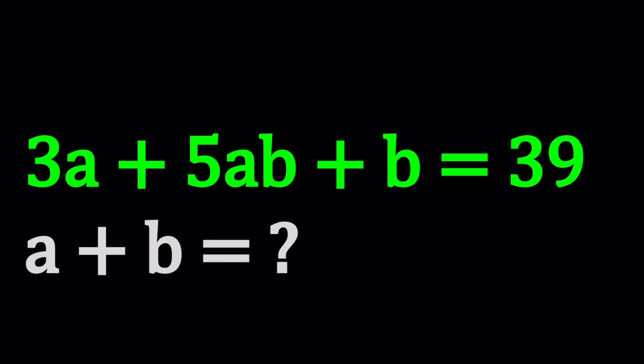Hello everyone. In this video we're going to be solving a Diophantine equation, which means an equation with integer solutions. We have 3a plus 5ab plus b equals 39. a and b are integers and we're going to be finding a plus b.